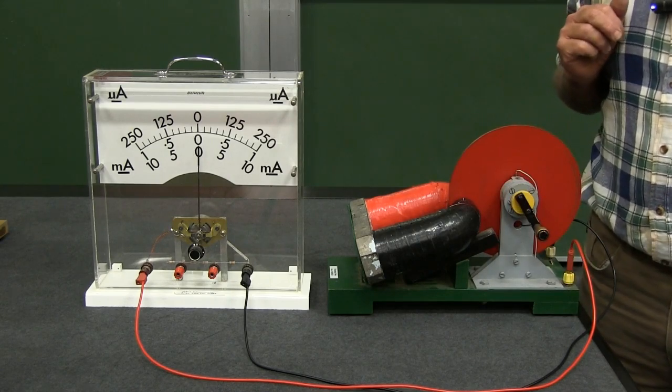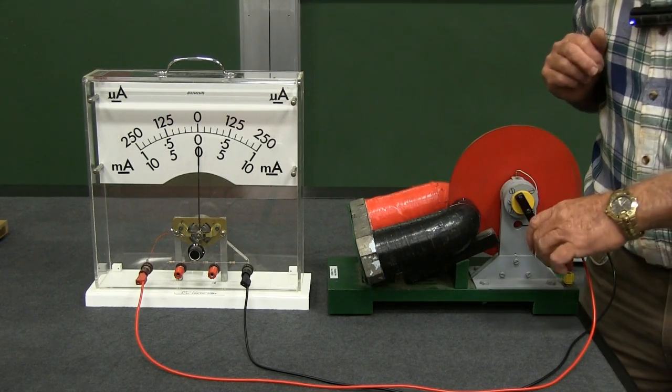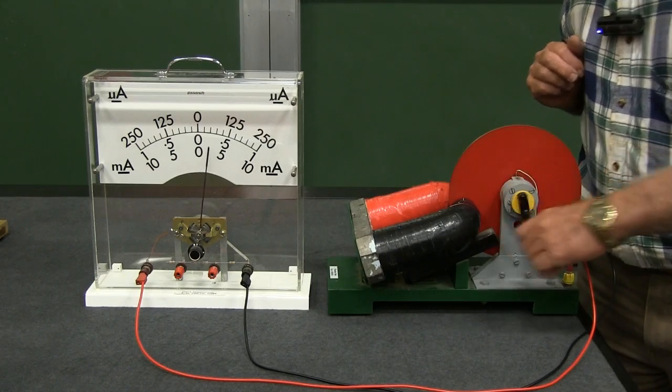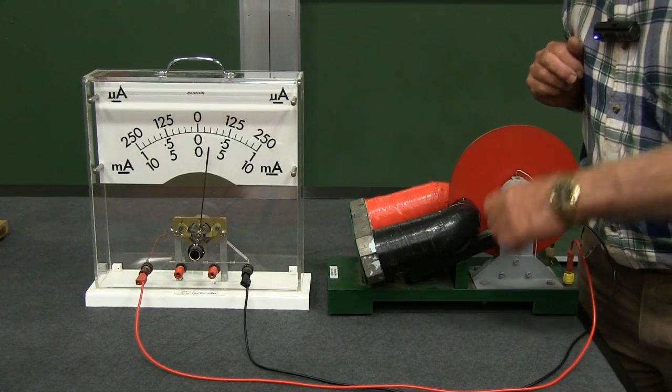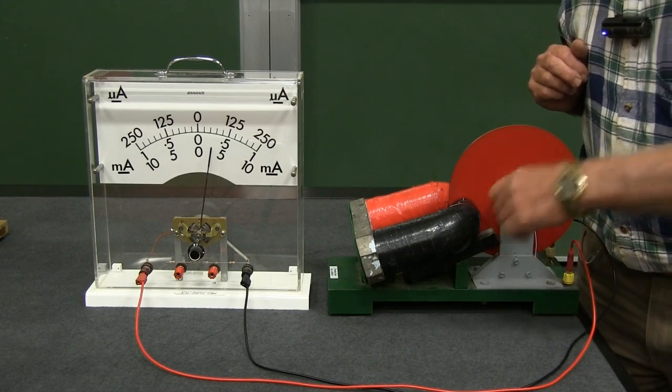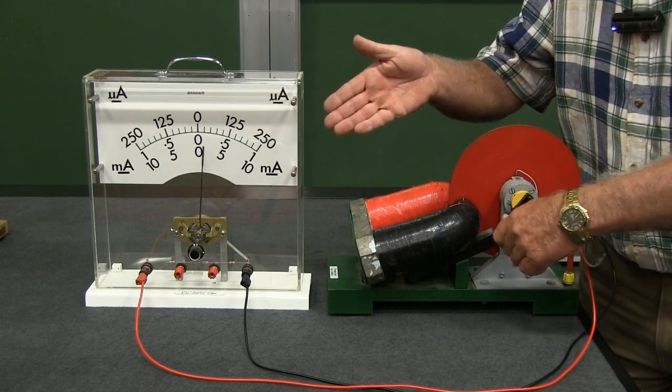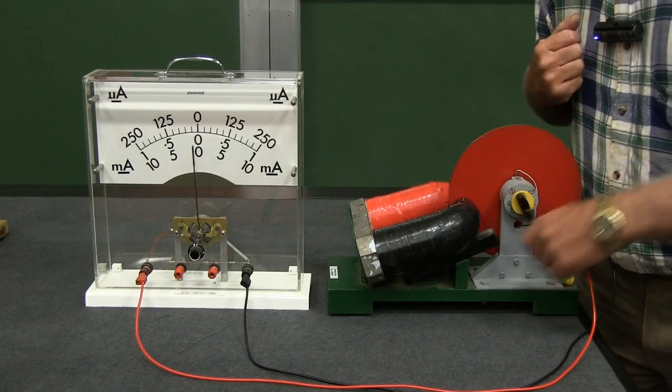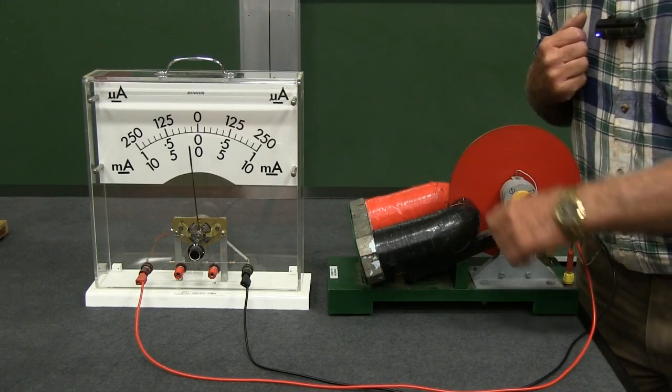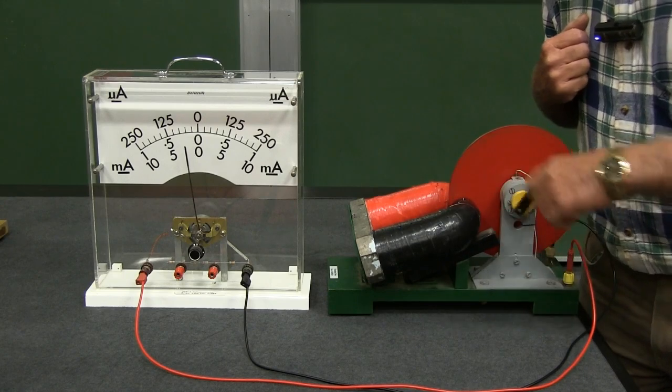This is what's known as the braking effect, and you will note that by rotating the disk inside the magnetic field we generate a small amount of electric current. If I go in the opposite direction, the current that is generated is of opposite polarity.